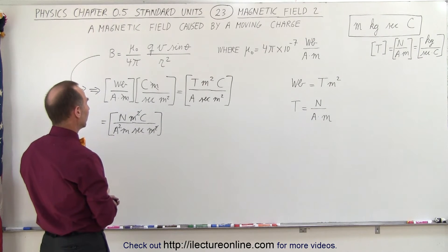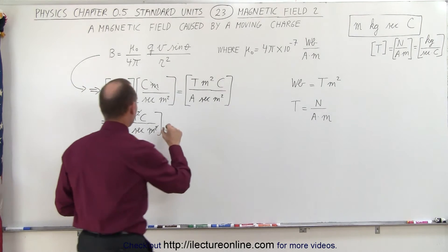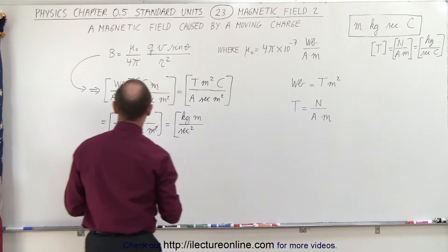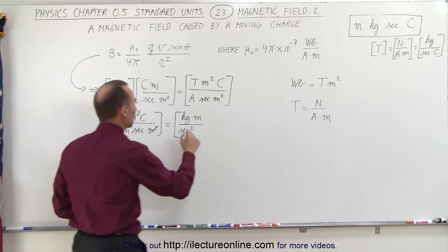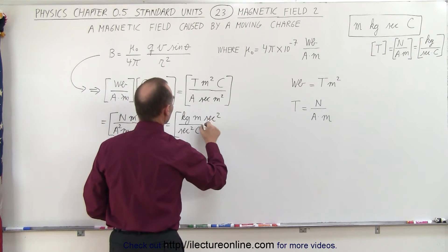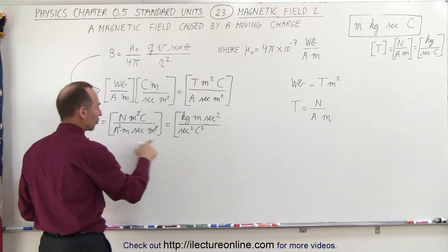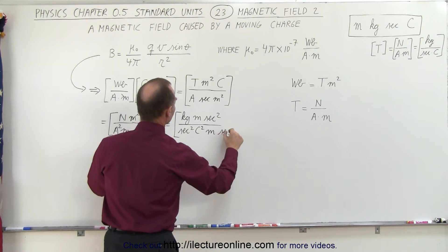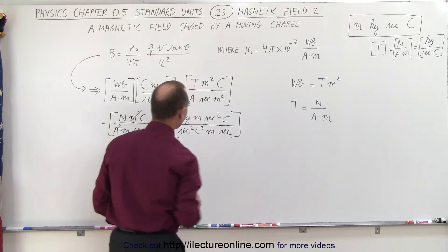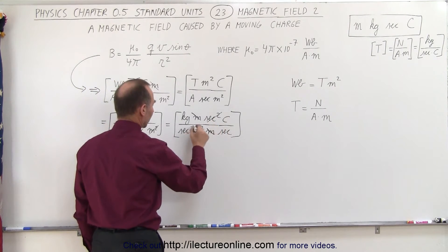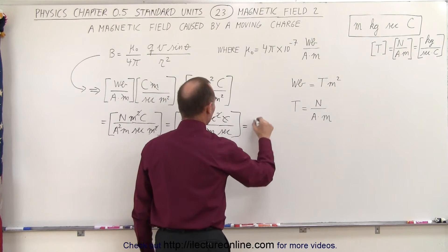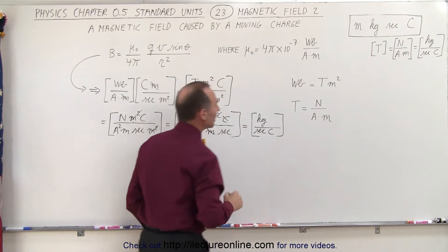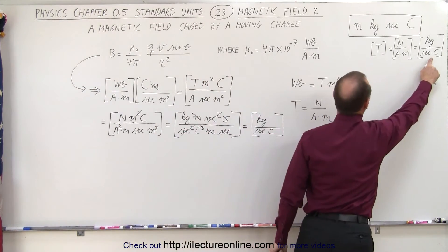Meters squared cancels out. Newtons can be written as kilograms meters per second squared. We have amps squared, and amp is coulombs per second, which means we need coulombs squared in the denominator and seconds squared in the numerator — so amps squared converts to coulombs squared per second squared. After canceling: meters cancels meters, seconds squared cancels seconds squared, and one of the coulombs cancels the other coulomb. What we have left is kilograms in the numerator divided by seconds times coulomb in the denominator, which is exactly the units for the magnetic field.